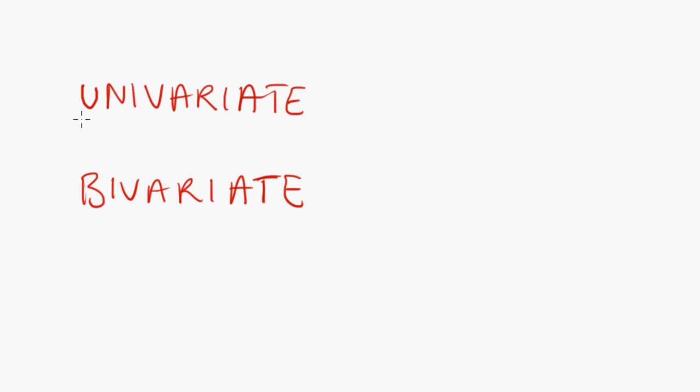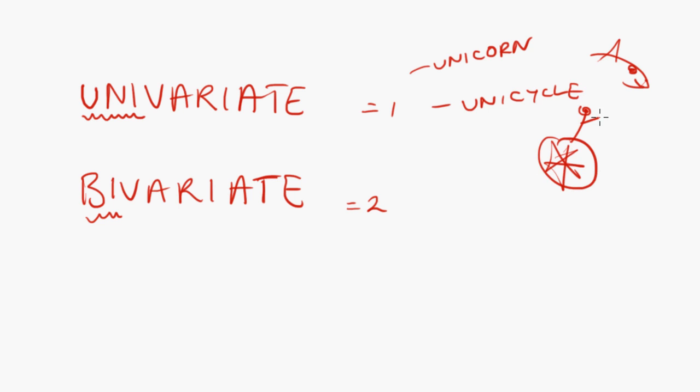Now the difference between them. If you think of uni meaning one and bi meaning two, so univariate as in unicorn, which is some sort of horse-like thing which has one horn on the top of its head. That is a terrible drawing. Or here's a better one, unicycle, which is a bicycle that has one wheel and a guy sitting on the top waving. One wheel.